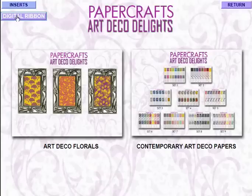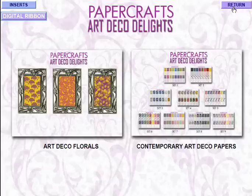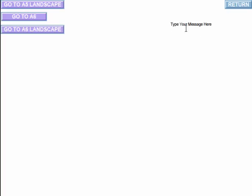A couple of other things in here: we've got our digital ribbon. If you click onto that and you have Adobe Reader 8 or above, you can type your own message and change the typeface and style to add various messages. We've also got inserts - click onto the inserts, type your message, print it, then run it through the printer twice. It comes in A5 landscape, A6, and A6 landscape.